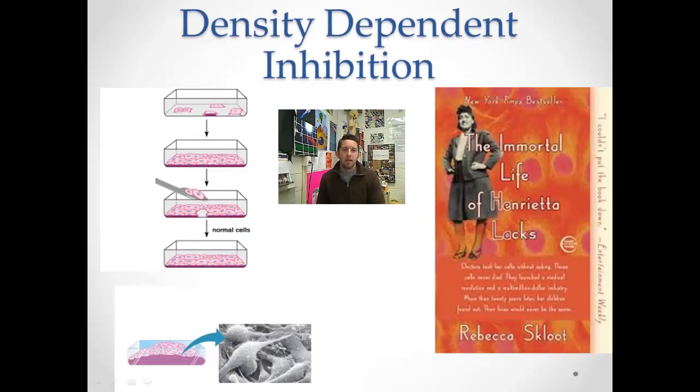Density-dependent inhibition is another factor that helps to control the cell cycle. Typically, normal cells will divide up to a certain density. Whether they start feeling, this is very anthropomorphized, but whether they start feeling claustrophobic, once they realize that they have cells on all sides, all those sensors start ticking, and they realize, okay, we are at a maximum capacity, at a maximum carrying capacity, we need to stop here. Or whether a level of nutrients is just high enough to support this population, we're not really sure. But they won't grow past a certain density. They'll stop, and they'll kick into G0.